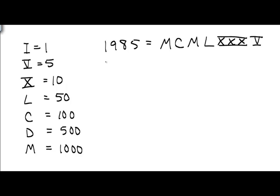This year is much easier. 2013 is simply MM for the 2000 and then the XIII for the 13. Much, much easier.